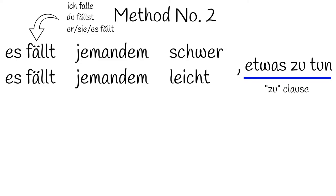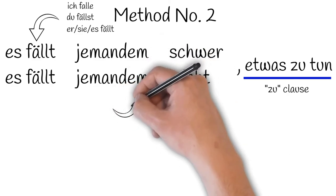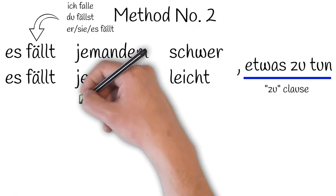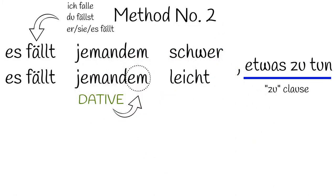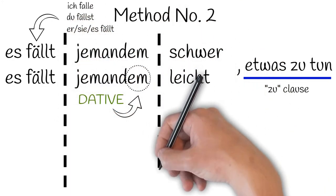You might have also noticed that the German word for someone, jemand, has a weird em ending in this phrase. That's because it is in fact dative. You are saying it falls easy or hard to someone to do something.